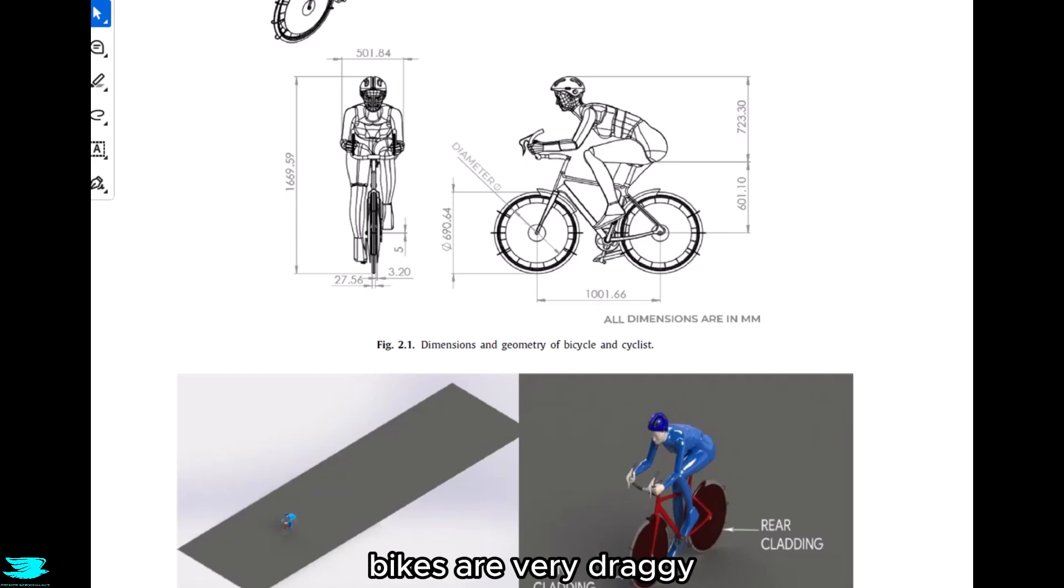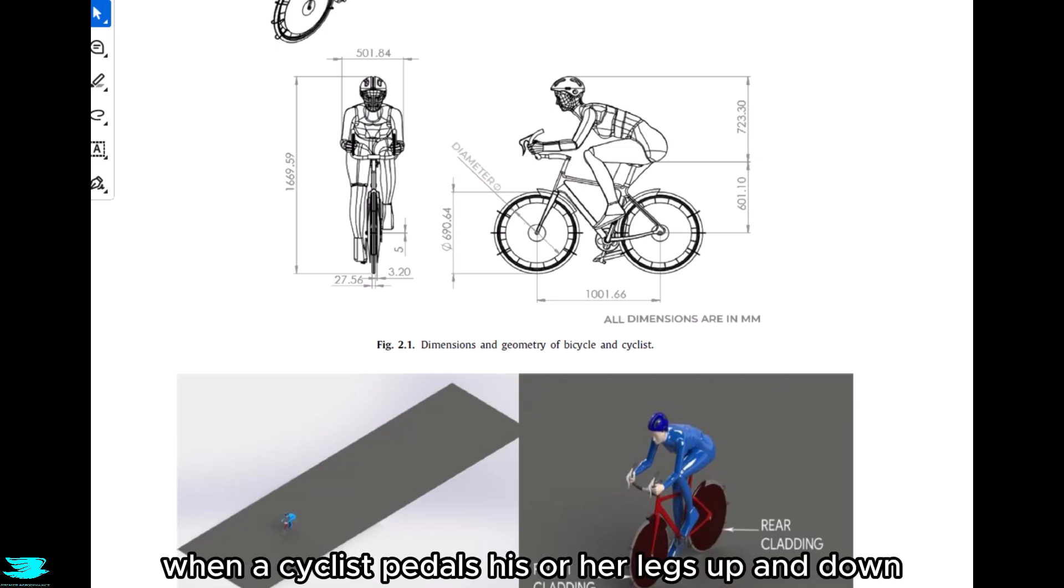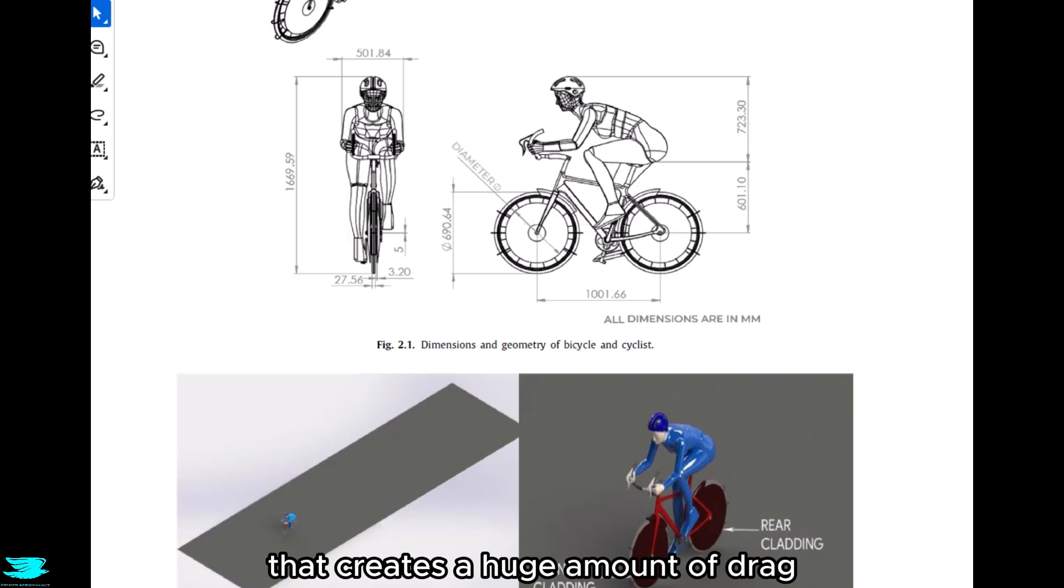Bikes are very draggy, and a lot has been done over the years to reduce their drag. For example, when a cyclist pedals, their legs moving up and down creates a huge amount of drag and turbulence. One ingenious way of reducing that drag is to widen the front forks so their wakes hit the rider's legs. That then reduces how much good fresh flow is wasted on them, and that reduces the drag in turn.